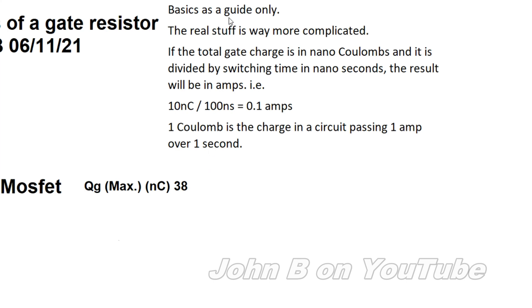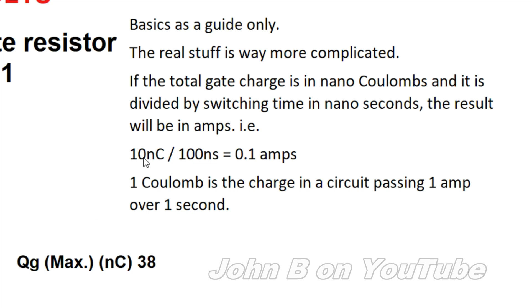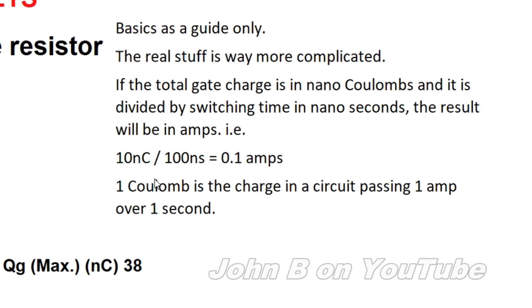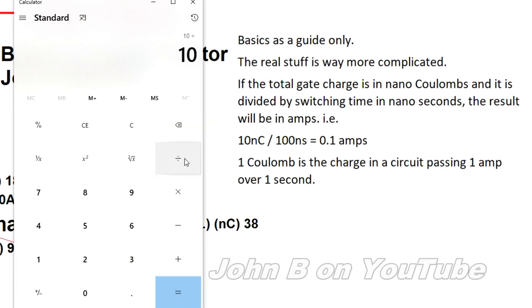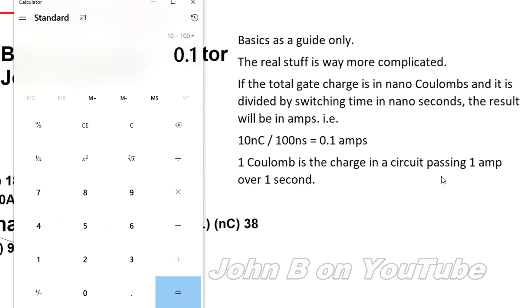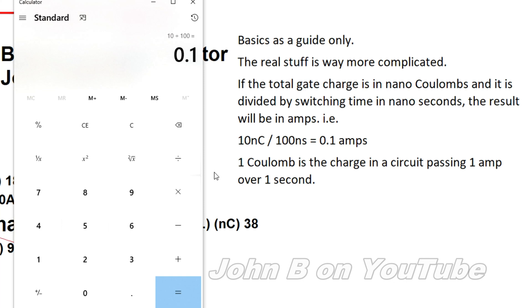I'll keep the maths easy — basics, a guide only. The real stuff is way more complicated. If the total gate charge is measured in nanocoulombs and divided by a switching time in nanoseconds, the result will be in amps. So if you've got a gate charge of 10 nanocoulombs and you want it to switch on in 100 nanoseconds, you need to supply 100 milliamps. So 10 nanocoulombs divided by 100 nanoseconds equals 0.1 amp, or 100 milliamps. One coulomb is the charge in a circuit passing 1 amp over 1 second — it's some huge quintillion number of electrons.